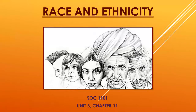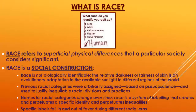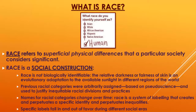Welcome back class. This week we are looking at race and ethnicity, chapter 11, unit 3. First off, what is race? It's a superficial physical difference that society considers significant. In the social sciences, we call race a social construction — something that society defines and considers significant. Different societies define and view race differently.